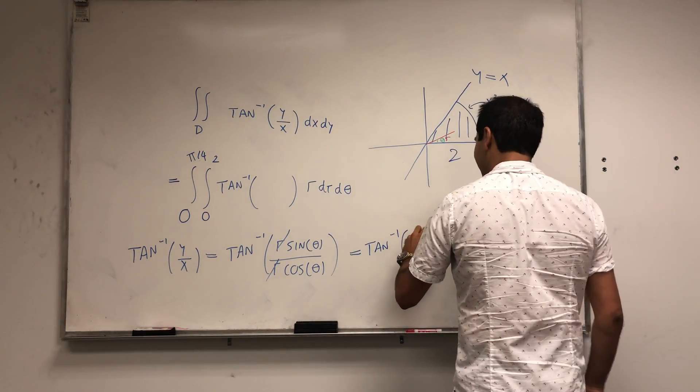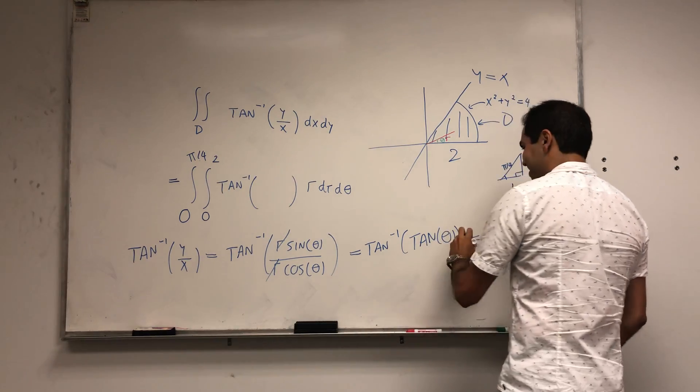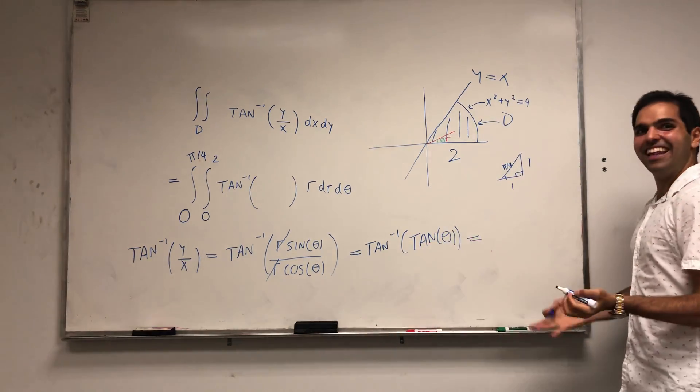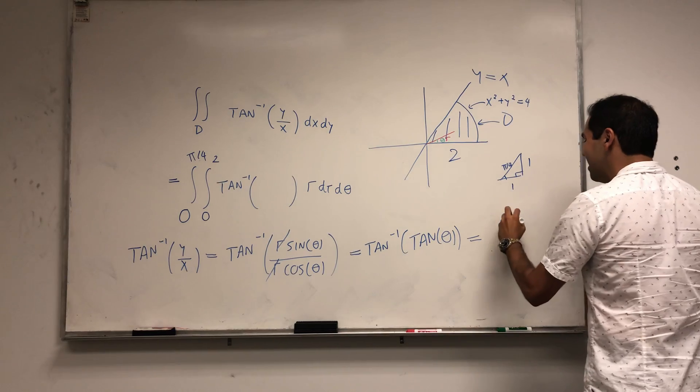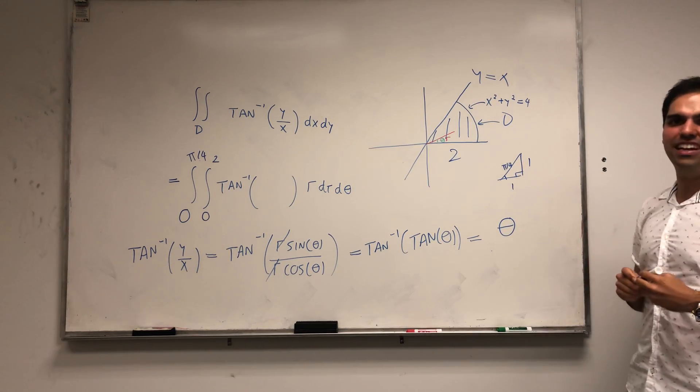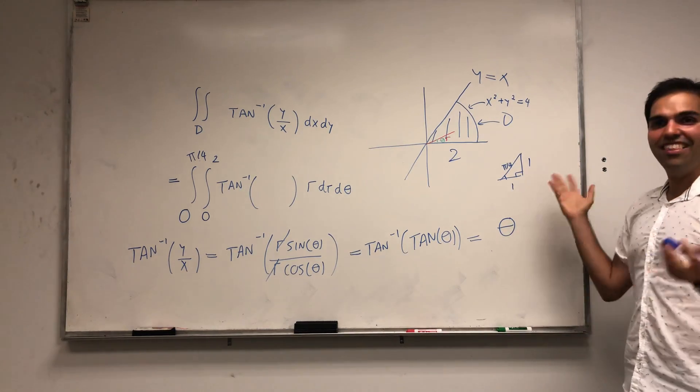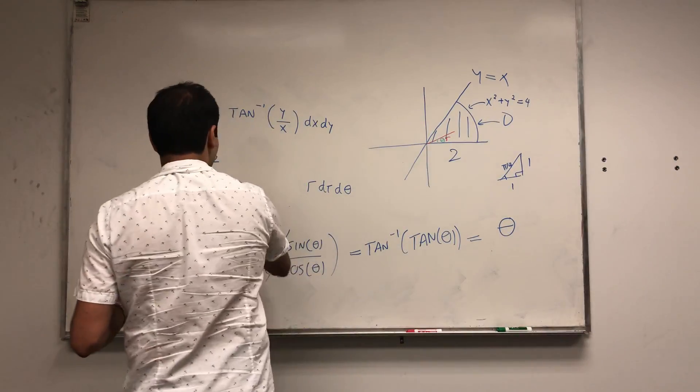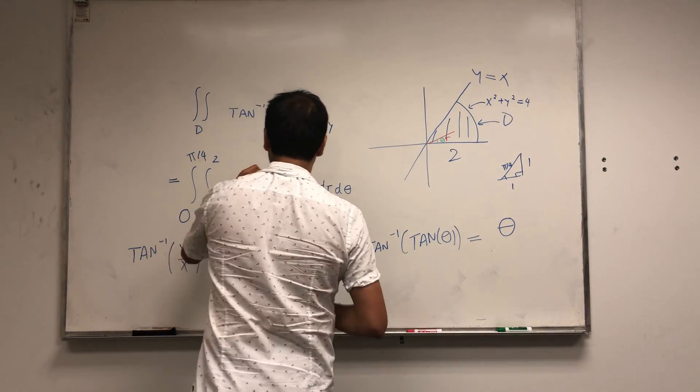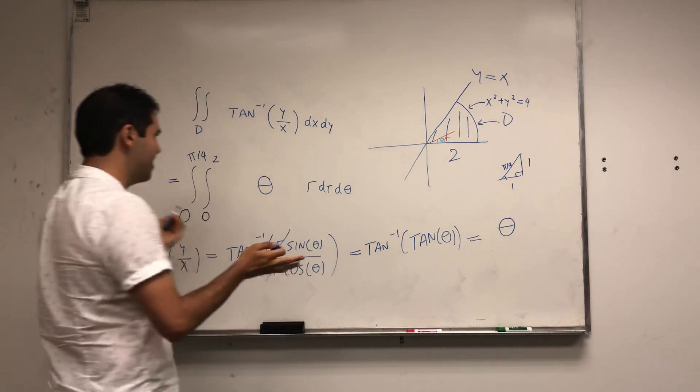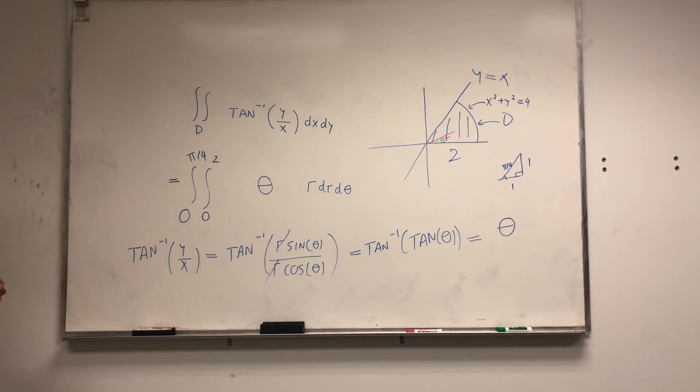But that's just the same as tangent theta. And notice now you get arctangent of tangent theta. So this very complicated function is nothing else than theta. So we can just erase this and we get theta r. How cool is that?